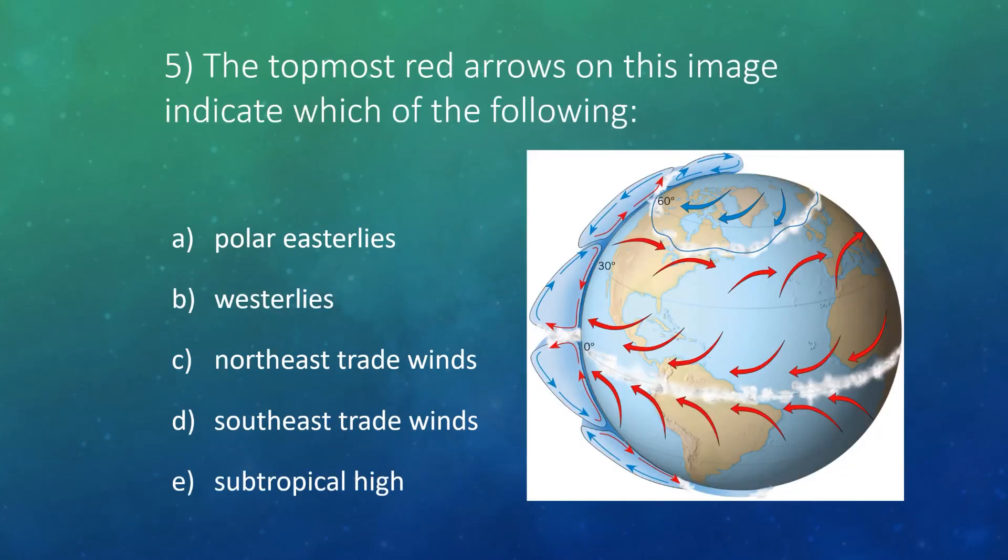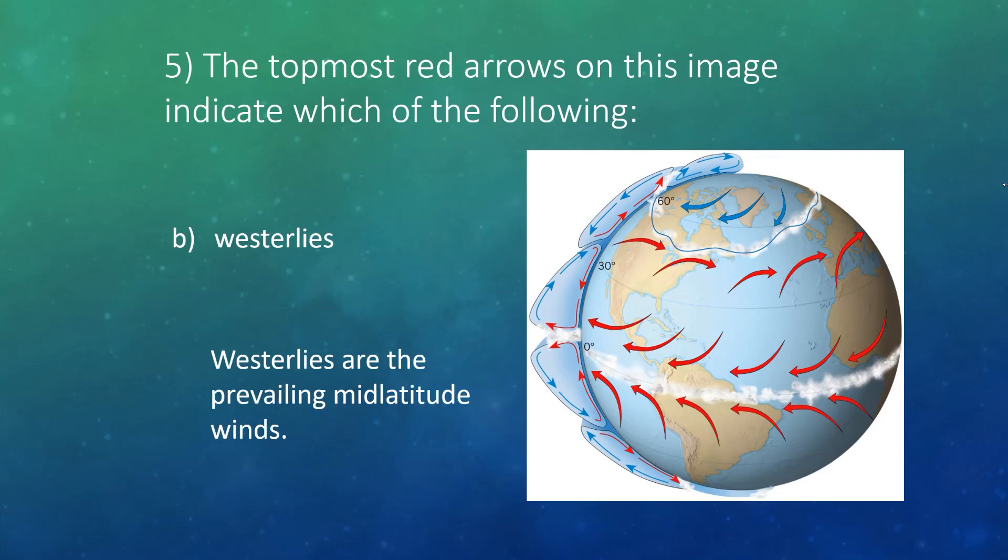Number five, the top most red arrows on this image indicate which of the following. So we're looking at these arrows here that go over the United States and Europe. Alright, well think about which way the winds are blowing in this case. They're blowing from the west. So we call these westerlies. These are the prevailing winds at our mid-latitudes, so the ones that govern basically the motion of our weather here in the United States.